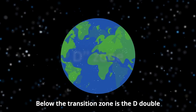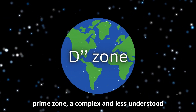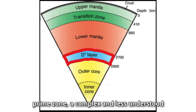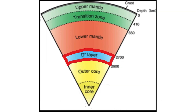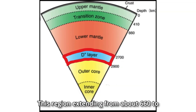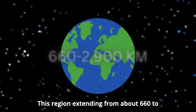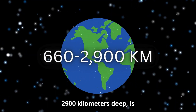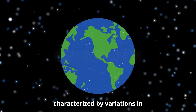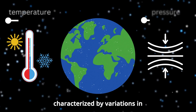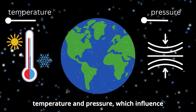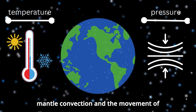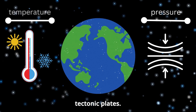Below the transition zone is the D double prime zone, a complex and less understood part of the lower mantle. This region, extending from about 660 to 2,900 kilometers deep, is characterized by variations in temperature and pressure, which influence mantle convection and the movement of tectonic plates.